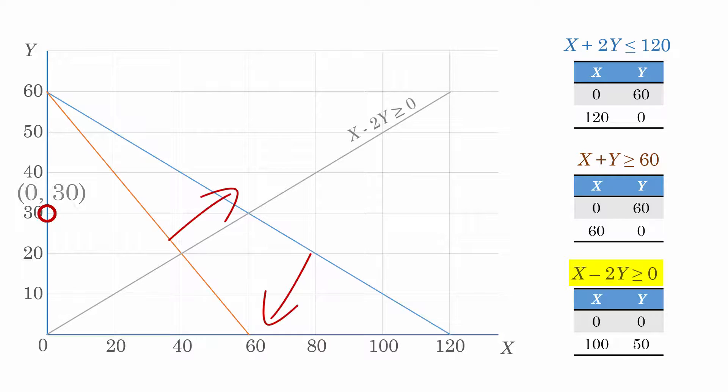Let's take this point 0, 30 for example. Putting it in the left side of the constraint gives negative 60, which is not greater than 0. In other words, the constraint is not satisfied in that direction. Just to confirm that it is satisfied in the opposite direction, let's try this point 40, 0. Substituting 40, 0 gives 40 on the left side, which is clearly greater than 0. So the third constraint is satisfied in this direction here.